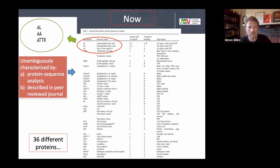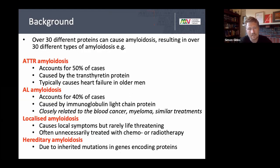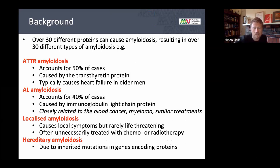Hereditary disease won't be covered in detail except for one slide on hereditary TTR. This presentation will focus on AL and ATTR amyloidosis. ATTR accounts for probably about 50% of all cases of amyloidosis, and it is a very underdiagnosed and undertreated disease. ATTR is caused by the transthyretin protein.